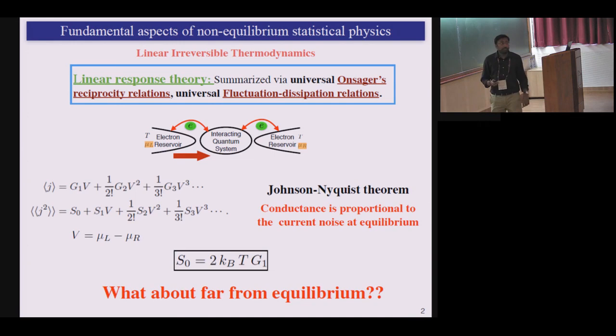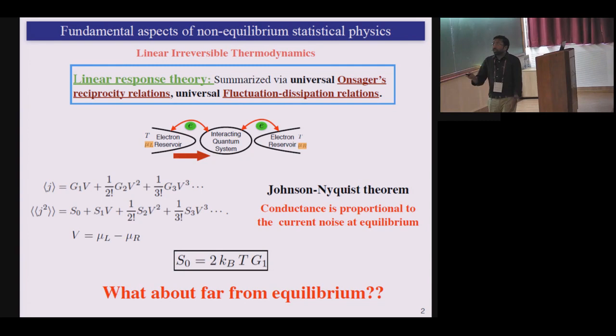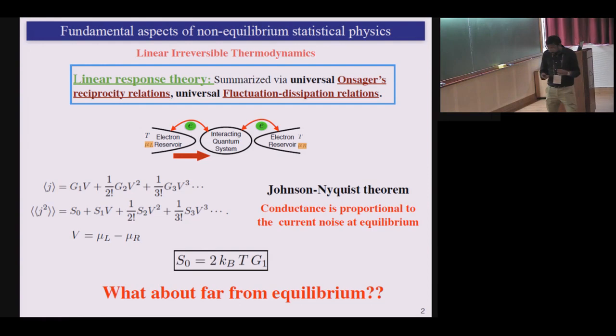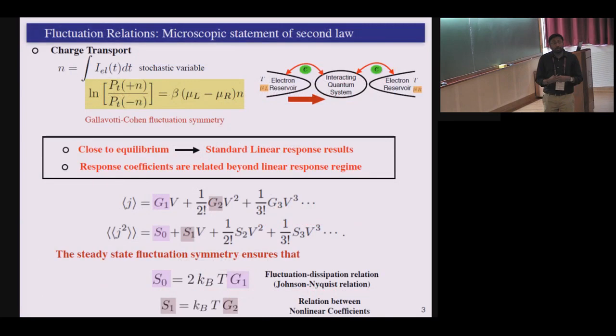So what linear response theory tells you is that this quantity S0 is related to this G1, which we call conductance. So this is the fluctuation and this conductance is sort of related to dissipation. So you can get this relation, which we also call in the context of transport the Johnson-Nyquist theorem, or also this is like a fluctuation dissipation theorem. So these are all well-established and well-known. And the question that you can certainly ask is, what happens if I now go beyond linear response? Do I have relations that relate this higher order transport coefficients?